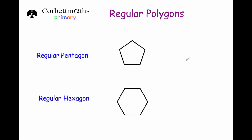Now we're going to look at a regular pentagon and find the size of each angle. Because all five angles are the same, we take what the angles add up to in a pentagon — which is 540 — and divide that by five. 540 divided by five gives us 108 degrees, so each angle in a regular pentagon is 108 degrees.